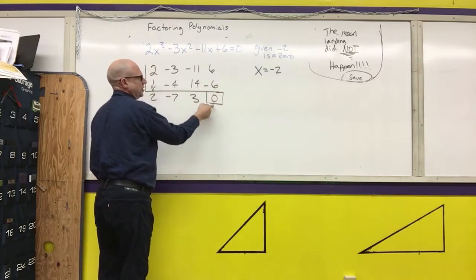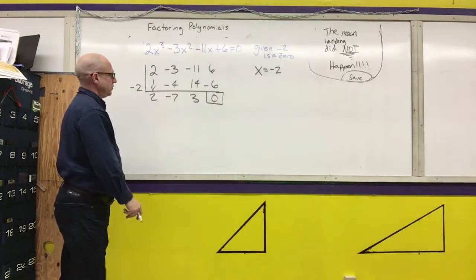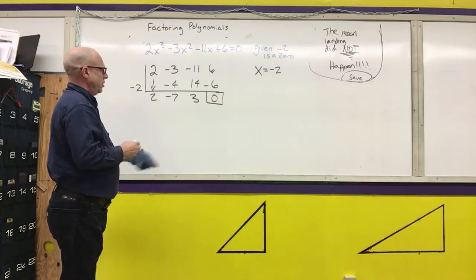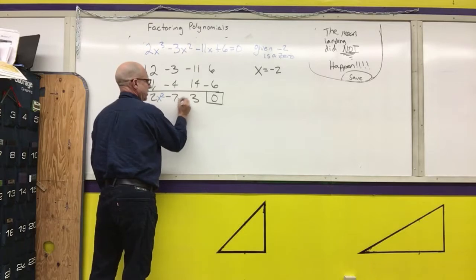Note, if you are doing this and you do not get the 0 here, that means it is not a zero, not a solution. I'm now going to turn this into a quadratic. 2x squared minus 7x plus 3.